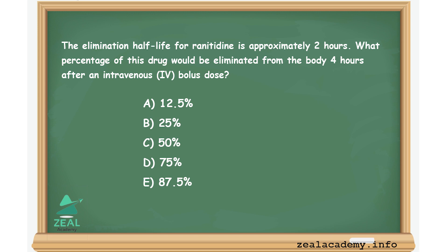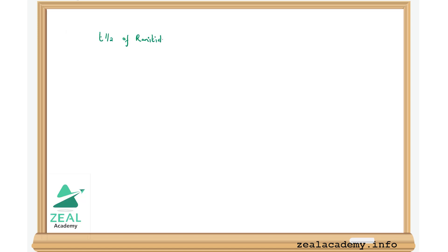The duration of action of a drug is known as its half-life. This is the period of time required for the concentration or amount of the drug in the body to be reduced by one half. The half-life of ranitidine is given to be two hours.